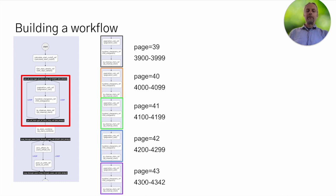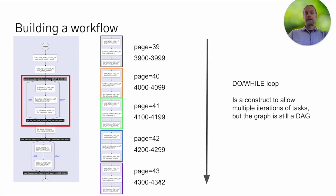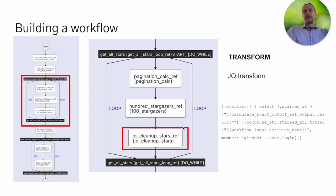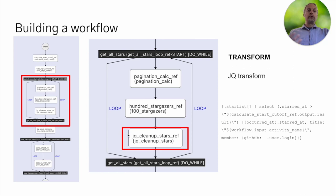In this example, the number of stars when I created this deck was 4,342. So it stops there. While it is called a loop, it's just a construct to allow multiple iterations of these tasks — the graph is still a DAG. It's just doing iterations 38, 39, 40, 41, 42 serially. The last step inside the loop is I do a little cleanup using a JQ transform. JQ is a command-line tool used to clean up JSON.